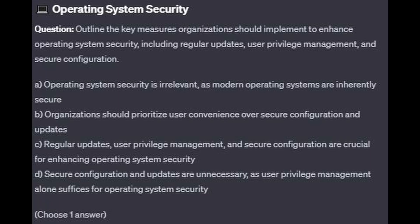Question 9: Outline the key measures organizations should implement to enhance operating system security, including regular updates, user privilege management, and secure configuration. Is it A: operating system security is irrelevant as modern operating systems are inherently secure? Is it B: organizations should prioritize user convenience over secure configuration and updates? Is it C: regular updates, user privilege management, and secure configuration are crucial for enhancing operating system security? Or is it D: secure configuration and updates are unnecessary as user privilege management alone suffices for operating system security?